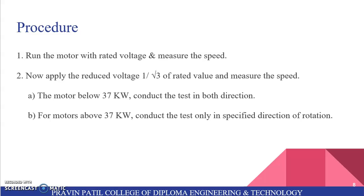Procedure: Run the motor with rated voltage and measure the speed. Now apply the reduced voltage, that is 1 by root 3 of rated value, and measure the speed. For motors below 37 kilowatts, conduct the test in both directions. For motors above 37 kilowatts, conduct the test only in specified direction of rotation.